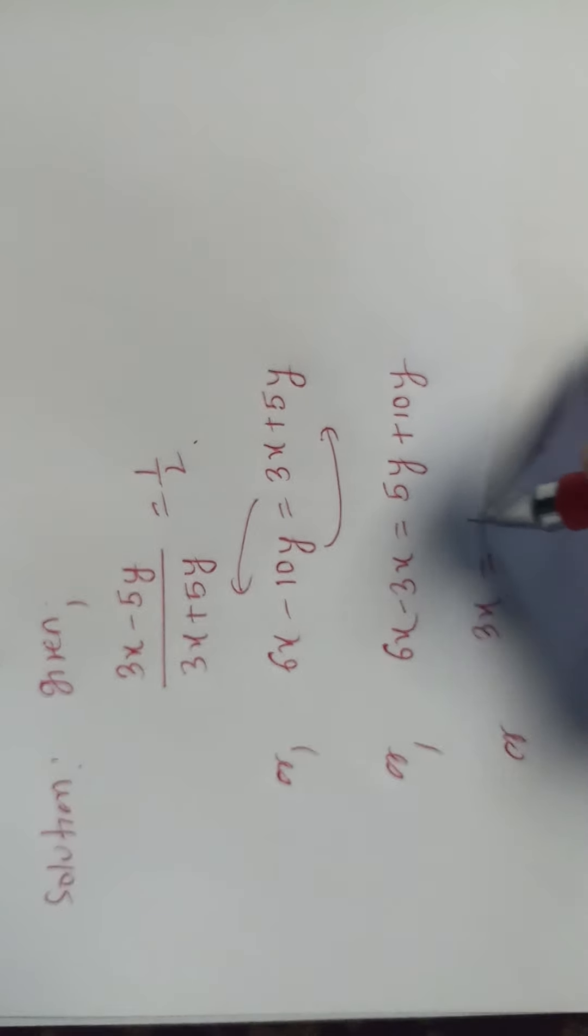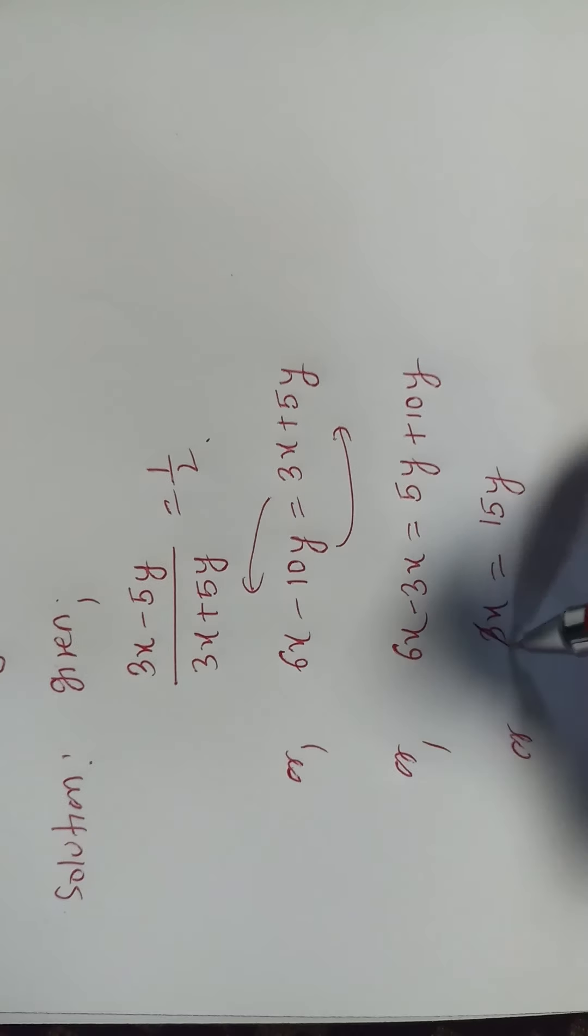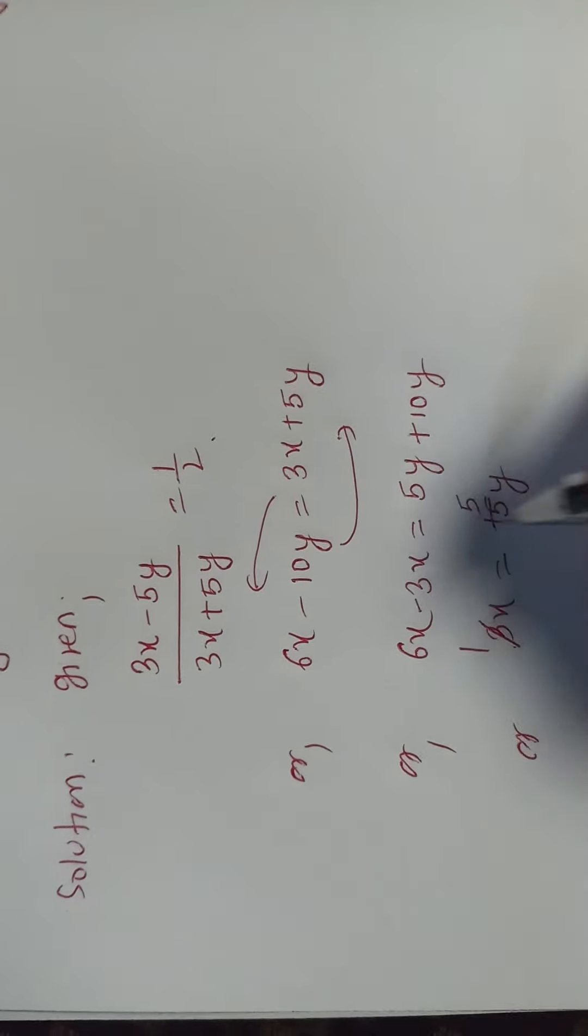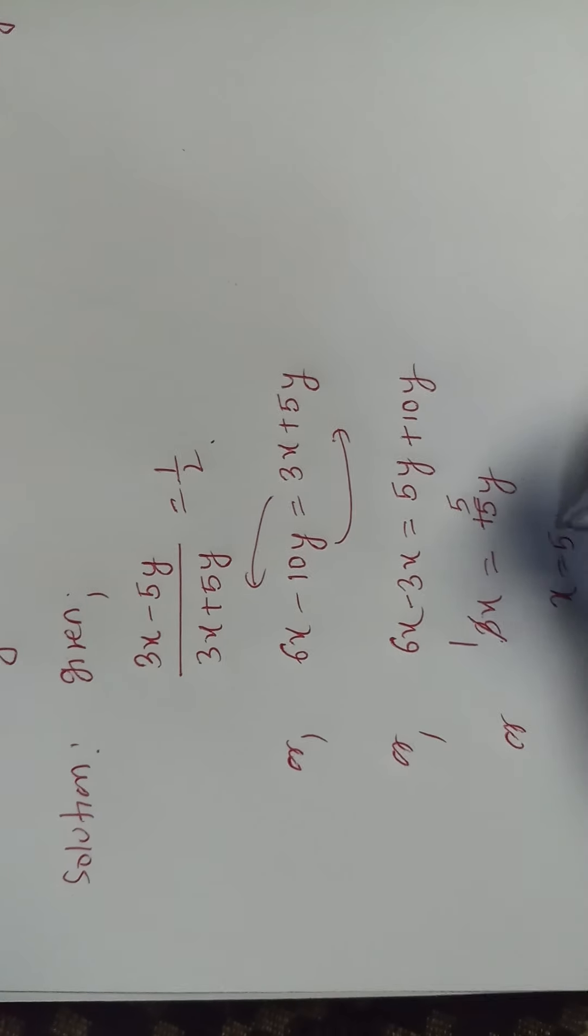3x equals to 15y. 3x is equal to 15y. 3 into 1 is 3, 3 into 5 is 15, x equals to 5y.